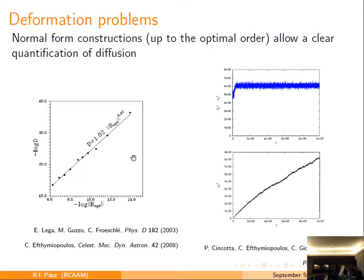On the other hand, the normal form distractions allow to determine how much will be this diffusion. Do we have a quantity, a number associated to this effect? And this can be done by comparing, actually, is a work that has done, Christos, with respect to some numerical estimation of diffusion coefficient done some years before, that there is a correlation between the coefficient of diffusion and the optimal remainder.